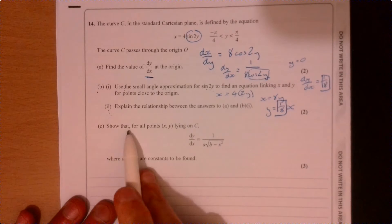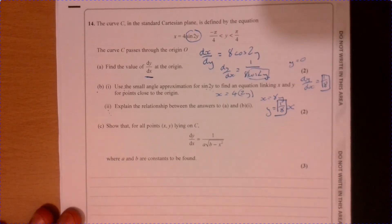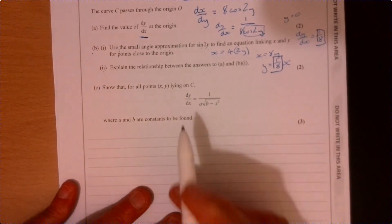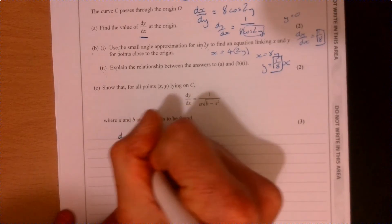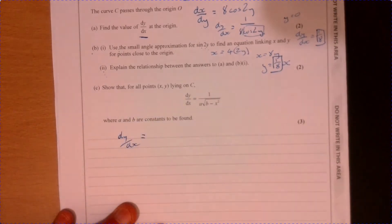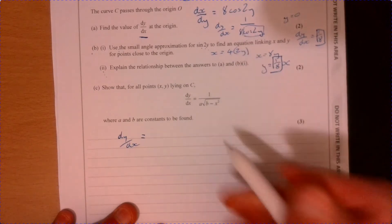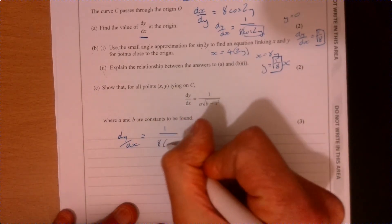Part C. I thought part C was probably one of the trickiest things on this paper to do. But let's have a little look. So we know that dy over dx is equal to 1 over 8 cos 2y. So let's just jot that down.